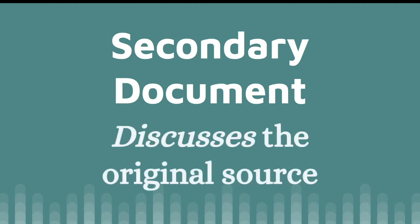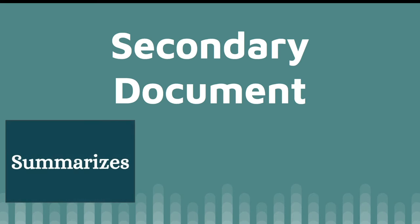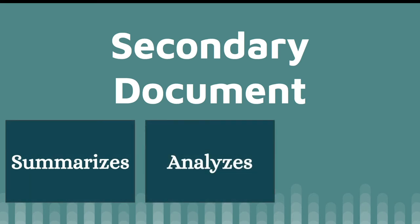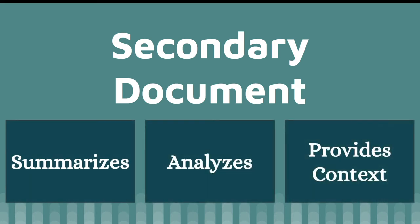A secondary source is one step removed from that. It discusses the primary document, usually summarizing or analyzing it and putting it into some type of context. So an article discussing the circumstances leading to the Declaration of Independence, or a book analyzing the themes and symbolism of Moby Dick, would both be examples of secondary sources.